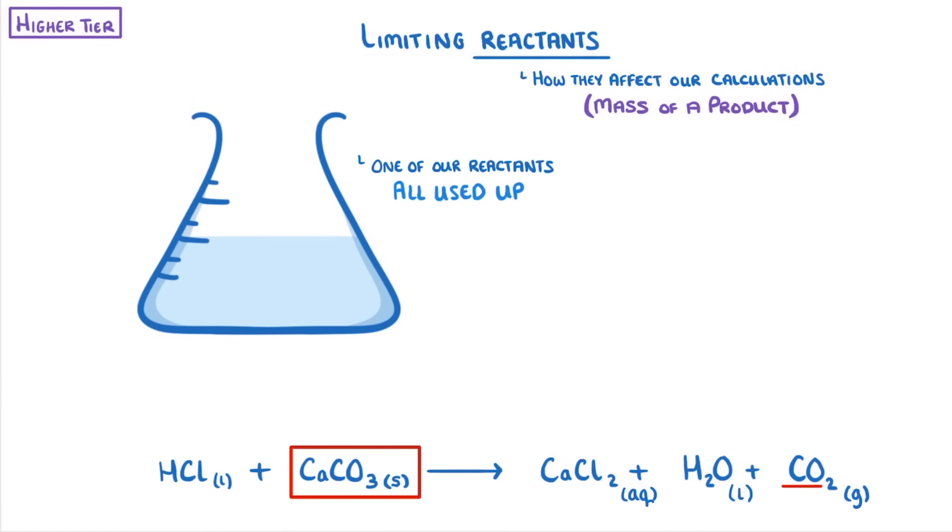If we can see that the calcium carbonate has all disappeared, then we know that it must have all been used up. And so we would call it the limiting reactant because it limited how much product could be produced.